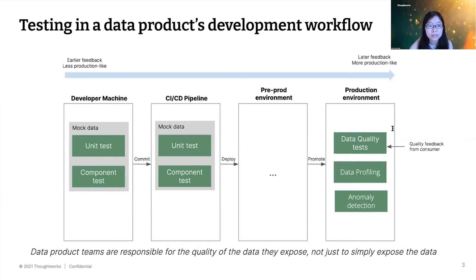One of my teams that didn't have data quality checks yet used data profiling in production to troubleshoot. Through our data profile, we found that for a few days there had been an increase in nulls in a particular field we were outputting. Luckily, our upstream data product also had data profiling set up, so we could check theirs and see if the problem was on their side or ours.